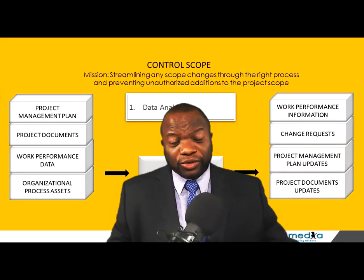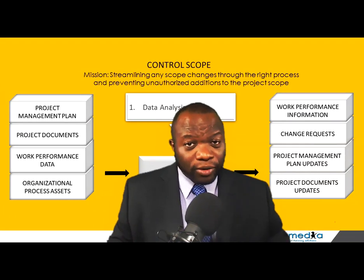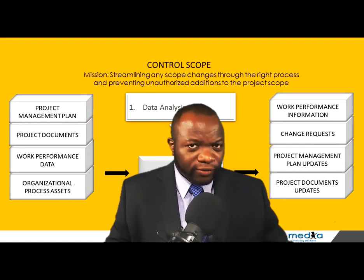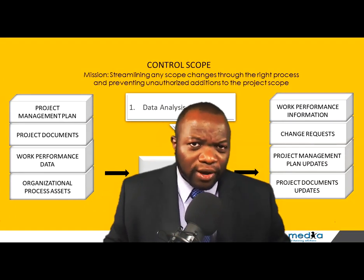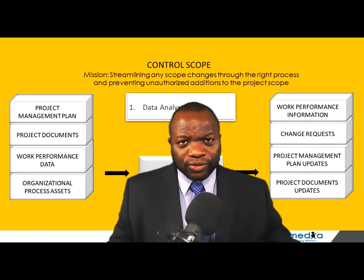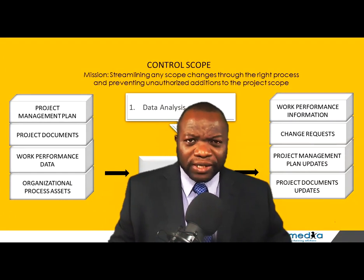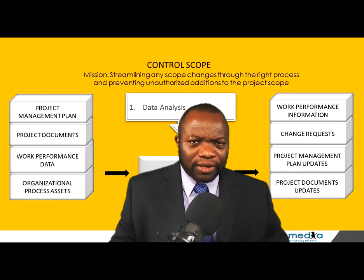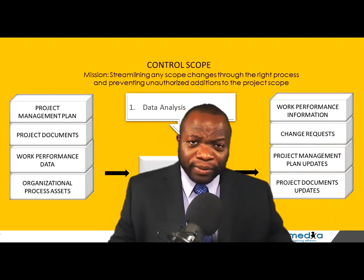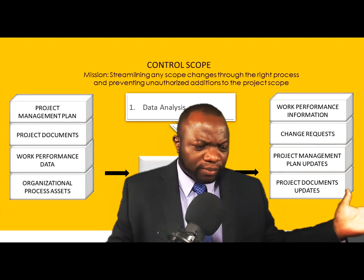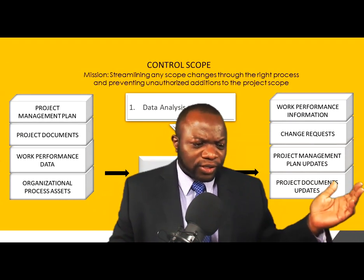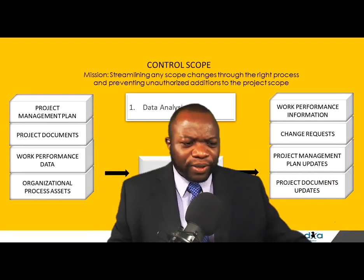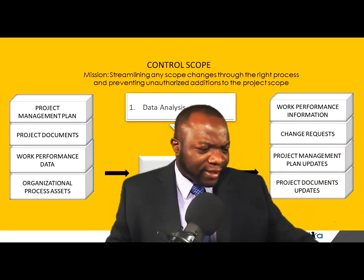When we talk about control scope, the outputs may not be as unique, but what you are doing is definitely something worthy of attention for the project manager. This is where you are preventing gold plating and scope creep, and you're getting change requests possibly. In addition to that, you're getting your usual updates — possible updates, project documents updates, project management plan updates, change requests, and WPI.